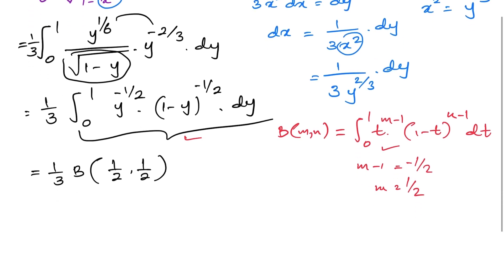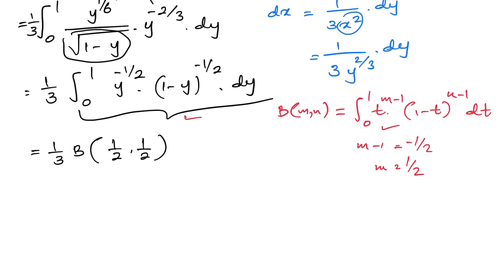Then we know about the relation of beta function and gamma function. Beta of mn is equal to gamma of m, gamma of n over gamma of m plus n. Here 1 over 3, gamma 1 half, gamma 1 half over gamma of 1 half plus 1 half, which is 1.